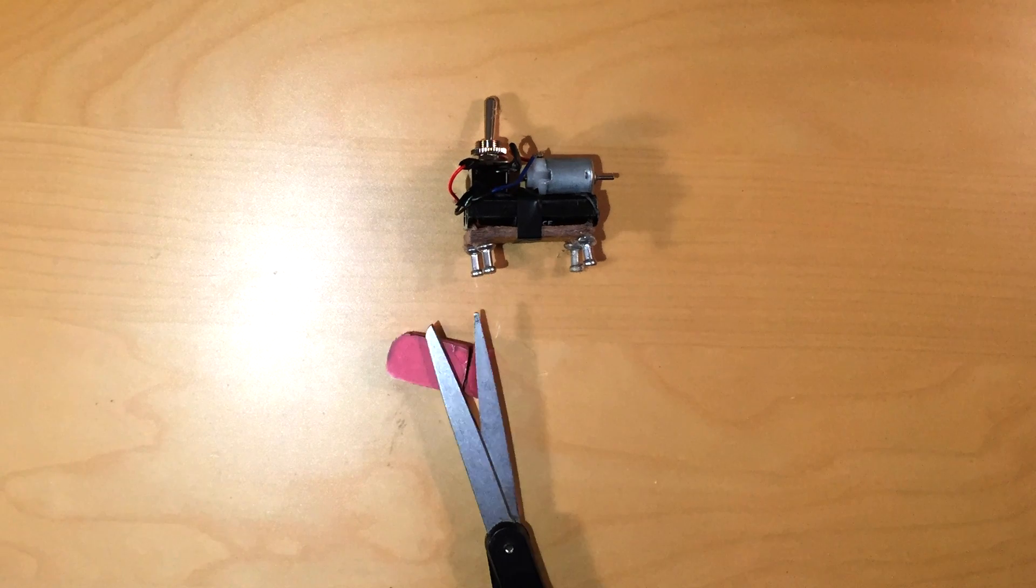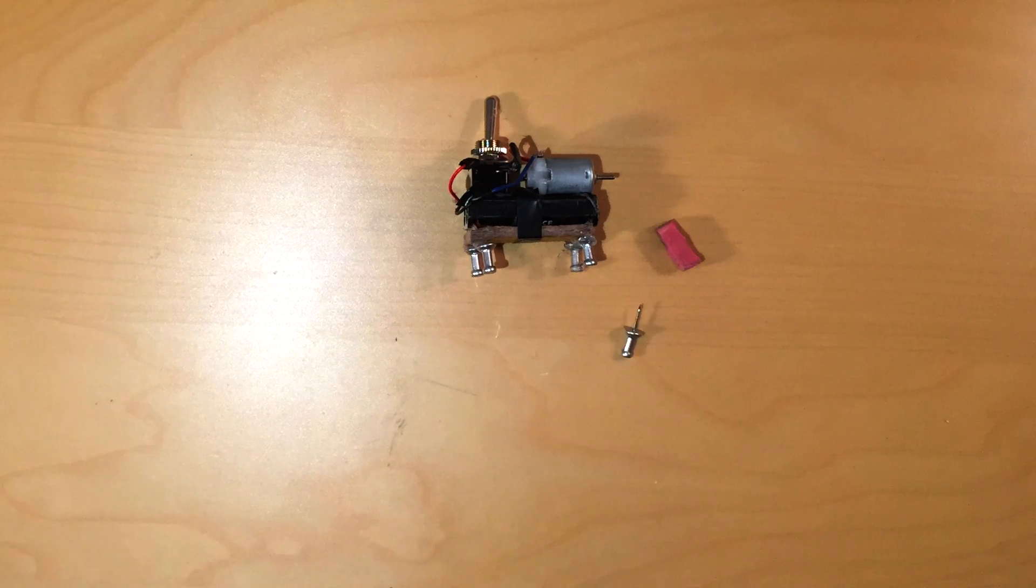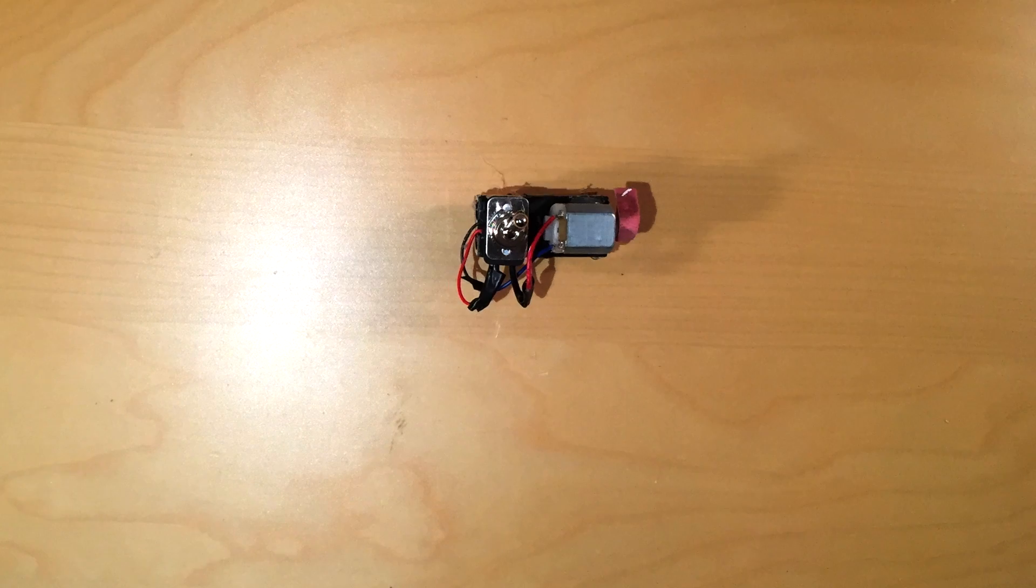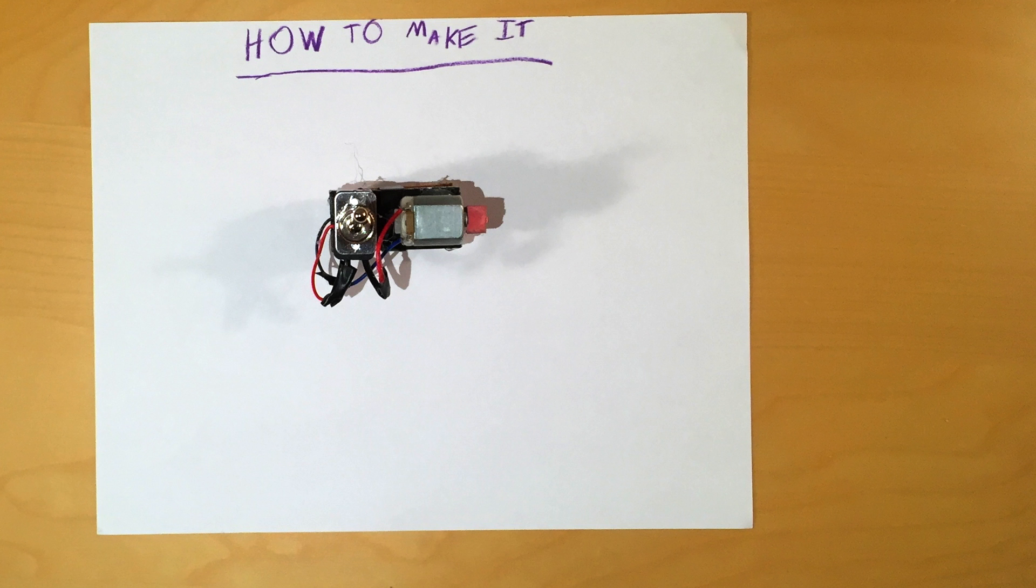Once your legs are set, cut off a piece of the eraser and poke a non-centered hole with a pushpin or other sharp object. Finally, attach the eraser to the shaft of the motor. Now your robot should be set. Flip the switch and see if it moves.